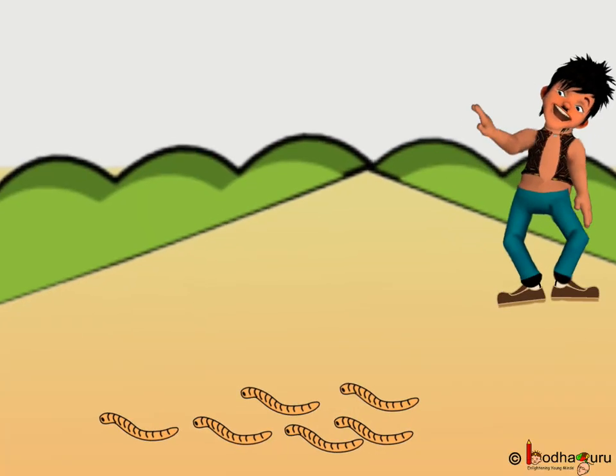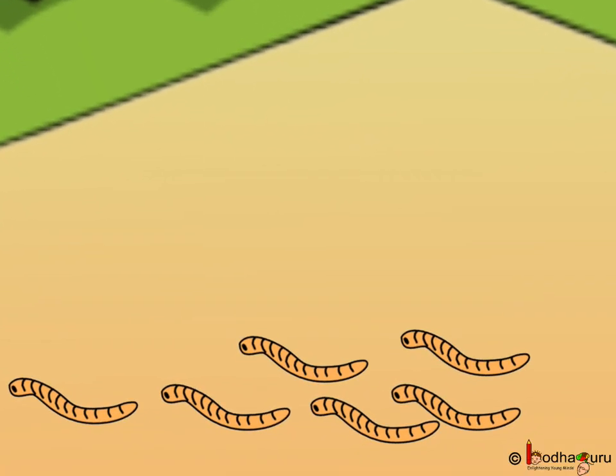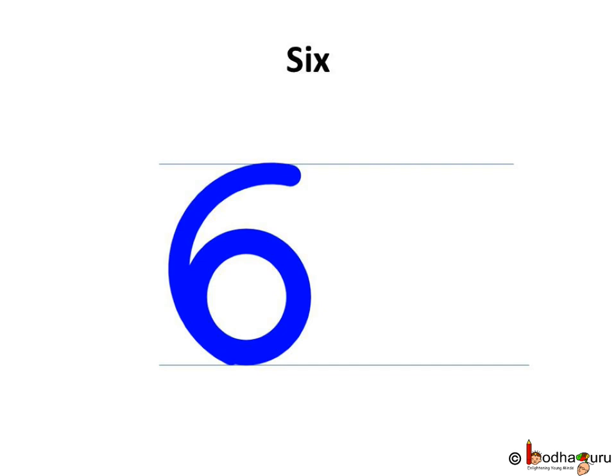Walking for a long time, Bholla saw earthworms. How many earthworms were there? 1, 2, 3, 4, 5, 6. Correct! 6 earthworms.